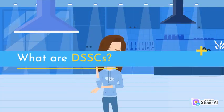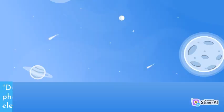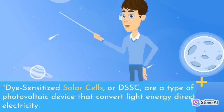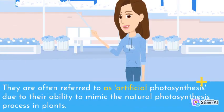What are DSSCs? Dye-sensitized solar cells, or DSSC, are a type of photovoltaic device that convert light energy directly into electricity. They are often referred to as artificial photosynthesis due to their ability to mimic the natural photosynthesis process in plants.